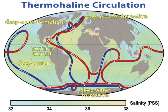Charles Wyville Thomson and Sir John Murray launched the Challenger expedition. Challenger, leased from the Royal Navy, was modified for scientific work and equipped with separate laboratories for natural history and chemistry. Under the scientific supervision of Thomson, Challenger travelled nearly 70,000 nautical miles (130,000 km) surveying and exploring. On her journey circumnavigating the globe, 492 deep-sea soundings, 133 bottom dredges, 151 open-water trawls and 263 serial water temperature observations were taken. Around 4,700 new species of marine life were discovered.